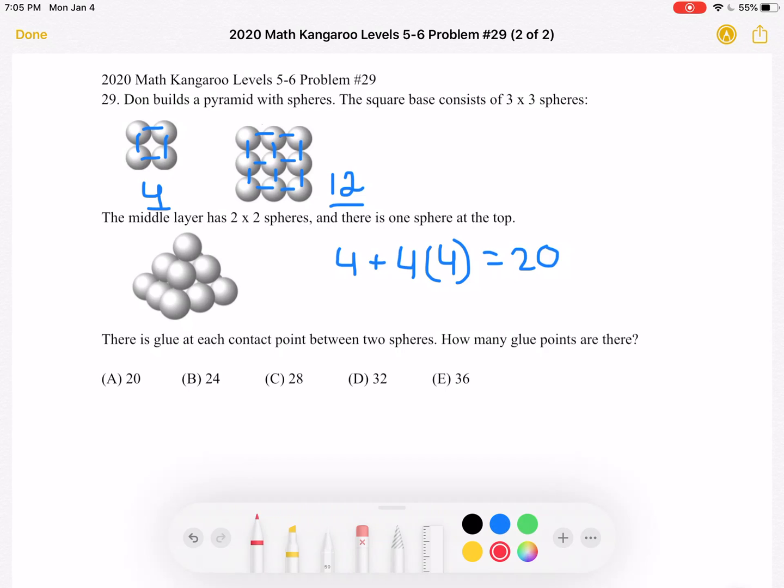Well, we can see that the number of contact points per column is n minus one, because we have two when it's three, one when it's two. And then we have n columns, right? As you can see, we have a column here, column here, column here.